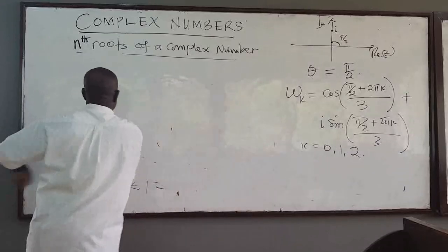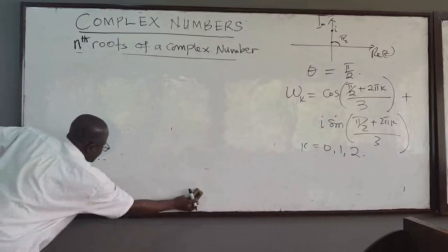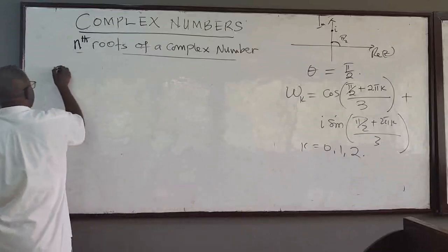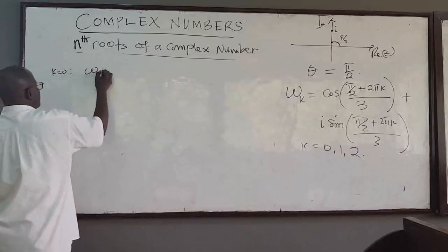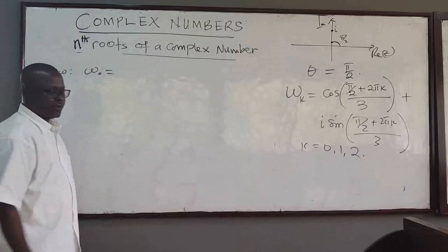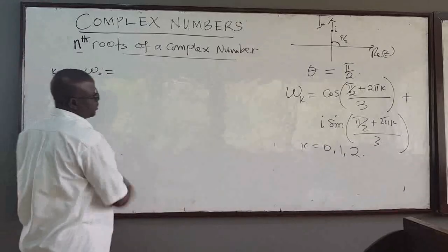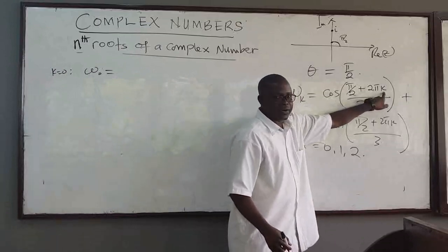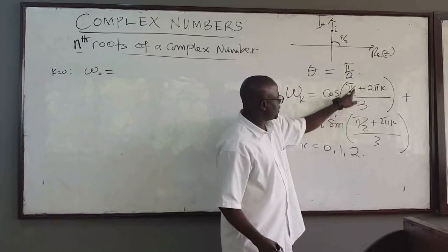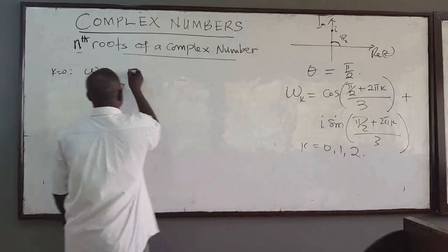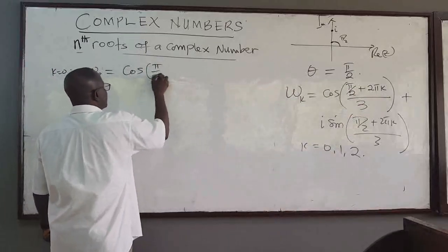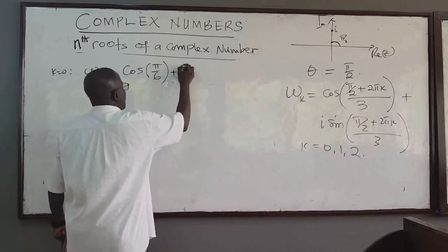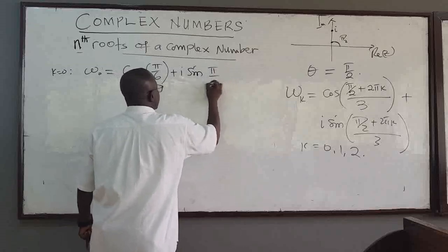For k equals 0, the first root w0 equals cosine of (pi over 2) over 3, which is pi over 6. So w0 equals cosine of pi over 6 plus i sine of pi over 6.